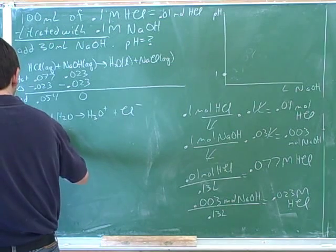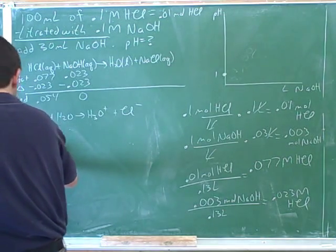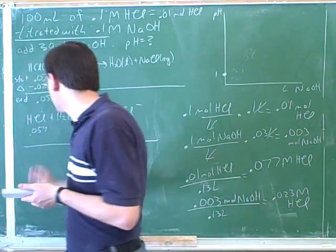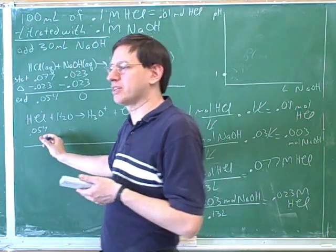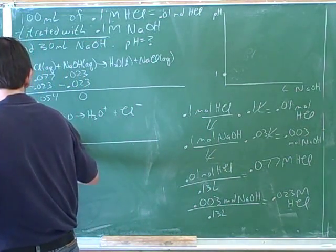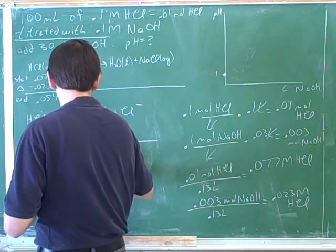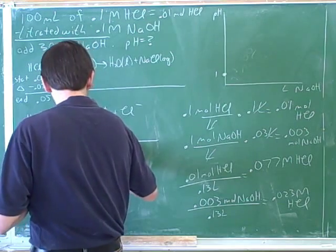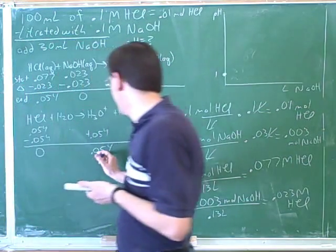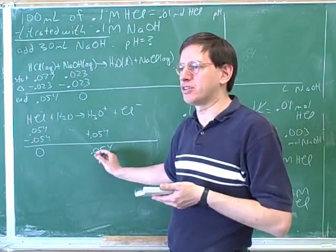We're starting with 0.054. Is this reaction going to get an equilibrium or completion? Completion. So this is a very simple reaction. This is so simple you might just do it in your head. So we know we're going to end up with 0.054 hydronium concentration.